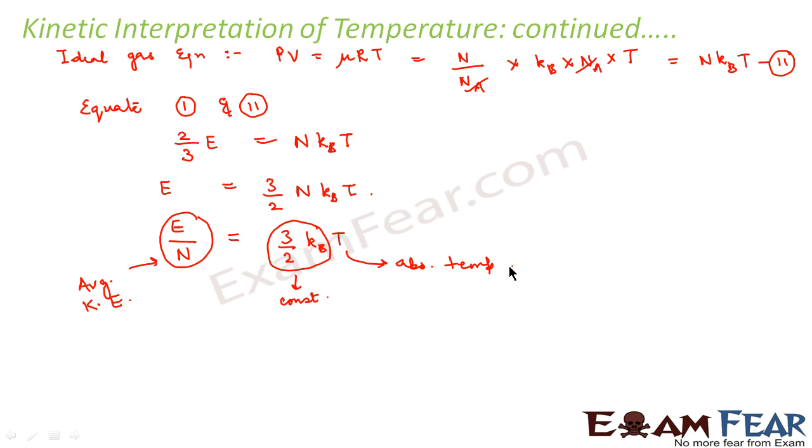So what do you see? You see that the average kinetic energy is proportional to the absolute temperature. So absolute temperature is the only factor that determines the average kinetic energy of an ideal gas.